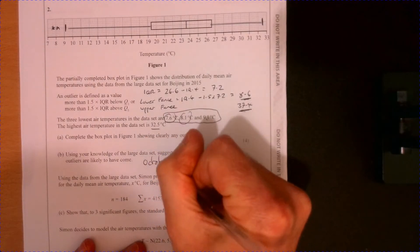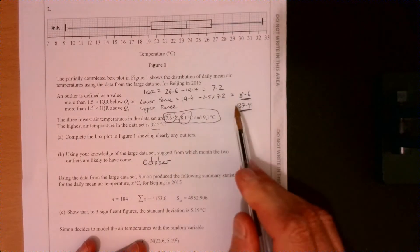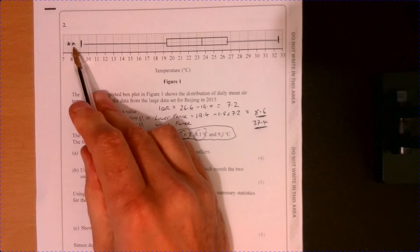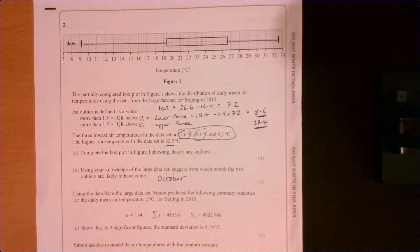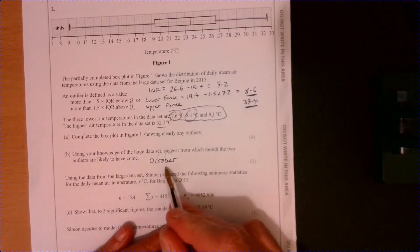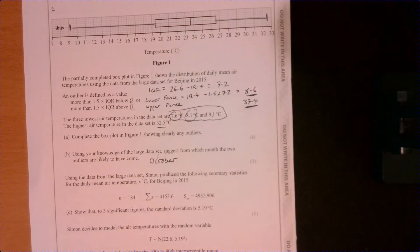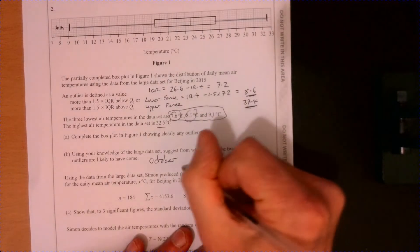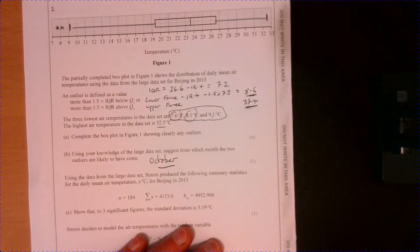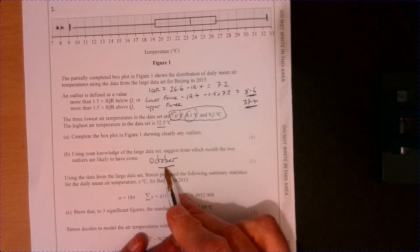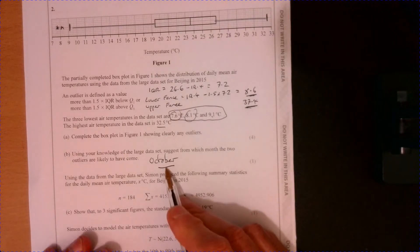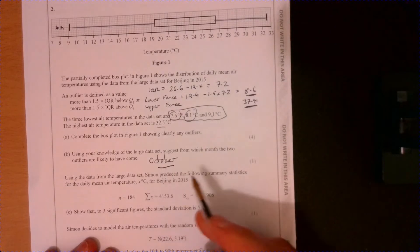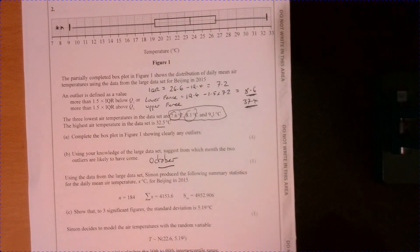Well, October. In October, these outliers, we're talking about these extremes down the bottom. So they're coming from a cold month. Well, it only goes to October. We're not including November, December, all of those. So October, it's likely to have come from October, but you need to have that knowledge about the data set to really be able to get that mark. Otherwise, you're a little bit stuck.